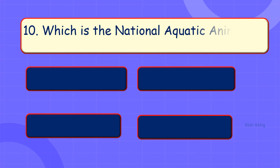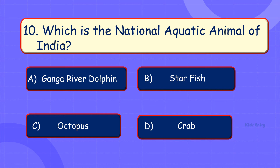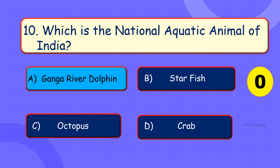Which is the national aquatic animal of India? A. Ganga river dolphin. B. Starfish. C. Octopus. D. Crab. Answer is Option A: Ganga river dolphin.